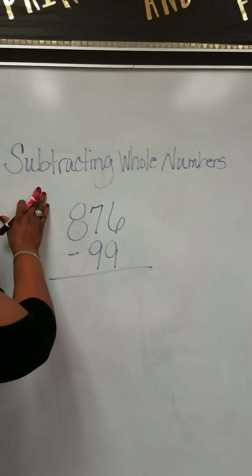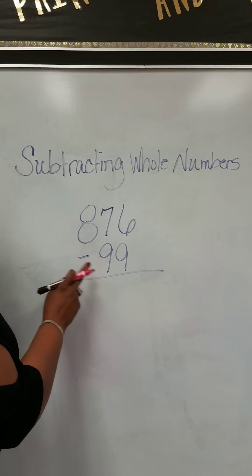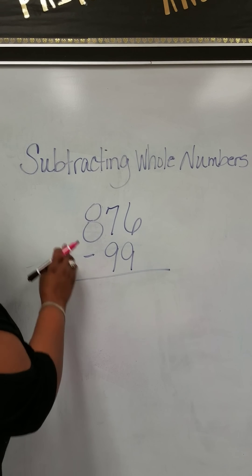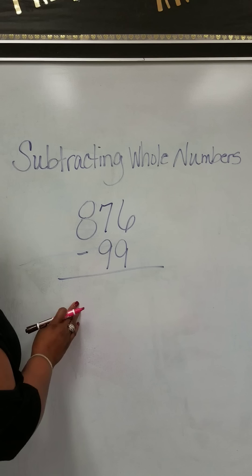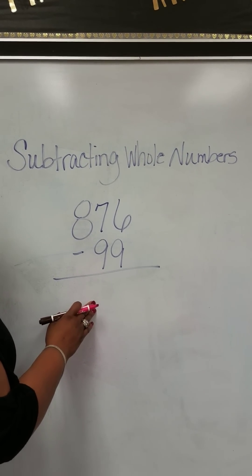Today we're going to be subtracting whole numbers. We have 876 minus 99. The rule is: if there's more on the floor, we're going to go next door and grab 10 more.